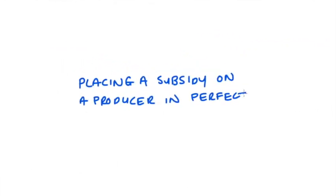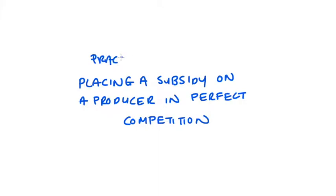Hi guys, in this video I'm going to go through a practice problem where I go through an example of placing a subsidy on a producer in perfect competition. I do have a video that explains just the theoretical side of it — it goes at a slower pace. It is a good background for this video if you need extra help, and I'll link to it in the description and in the corner.